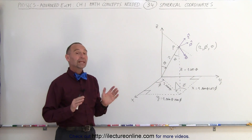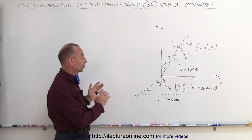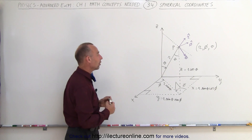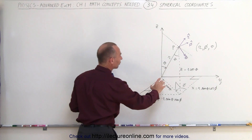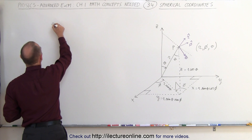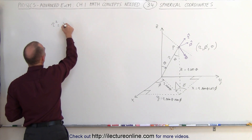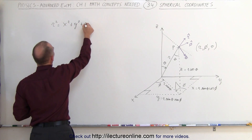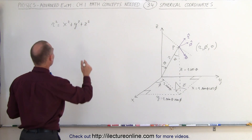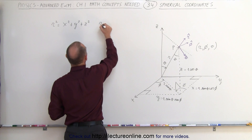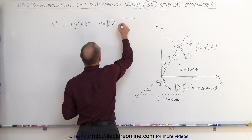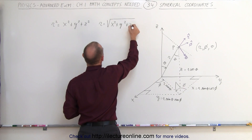Now we want to find relationships between the Cartesian coordinate system and the spherical coordinate system. We can express R in terms of x, y, and z: R squared equals x squared plus y squared plus z squared — like the Pythagorean theorem in three dimensions. Therefore R equals the square root of x squared plus y squared plus z squared.